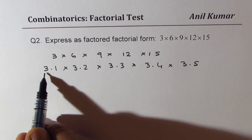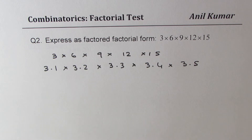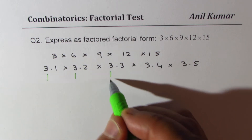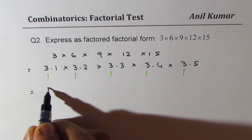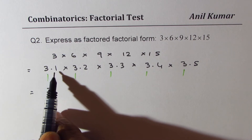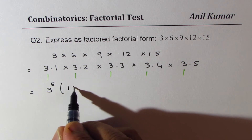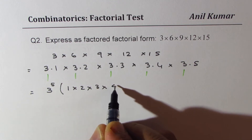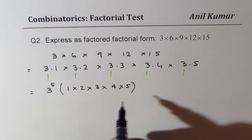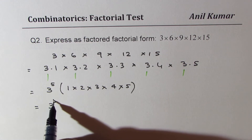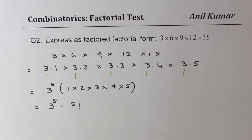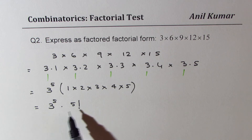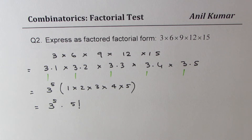You could think about how many 3's we have. We have 1, 2, 3, 4, 5 — five 3's. So that gives us 3 to the power of 5. And what else do we have? We have 1 times 2 times 3 times 4 times 5. So we could write this as 3 to the power of 5 times 5 factorial. That is the factored factorial form.